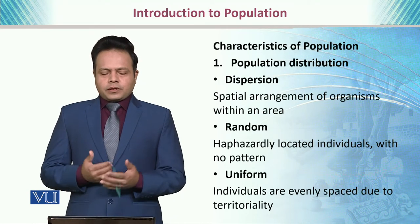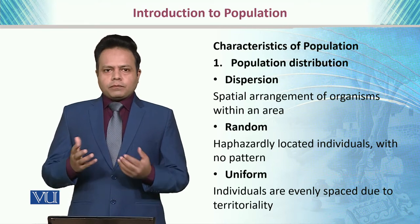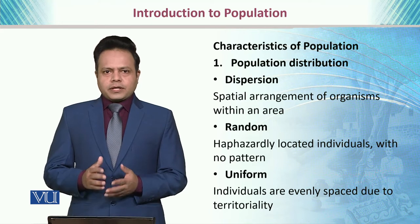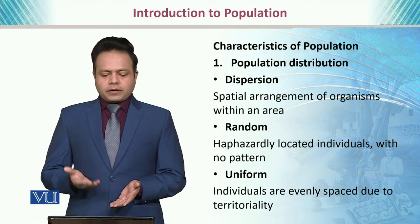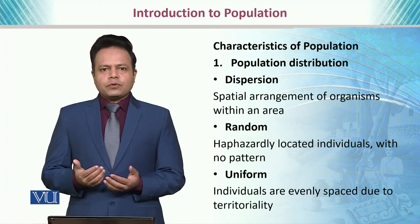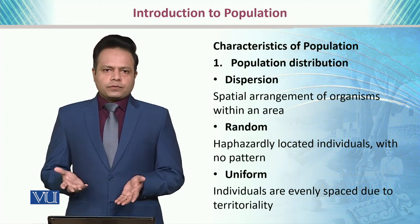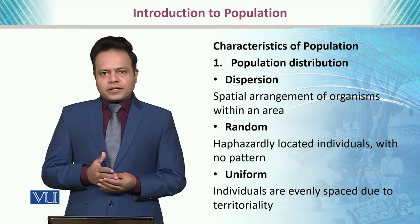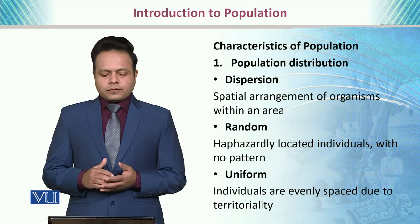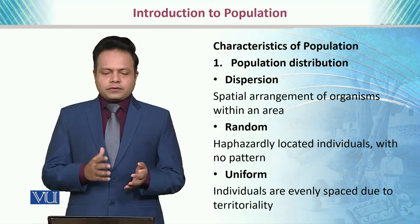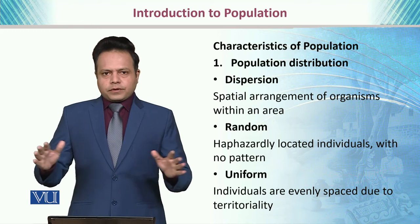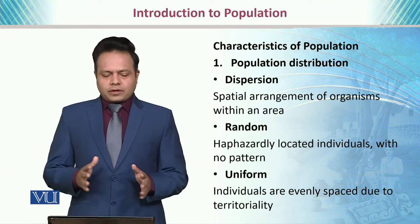If we are more concerned about the population issues, we have to understand the characteristics of population. By characteristics, number one, we need to understand the population distribution, for which we have indicators like dispersion. Dispersion means the spatial arrangement of organisms within an area — how dispersed they are in a specific geographic area.